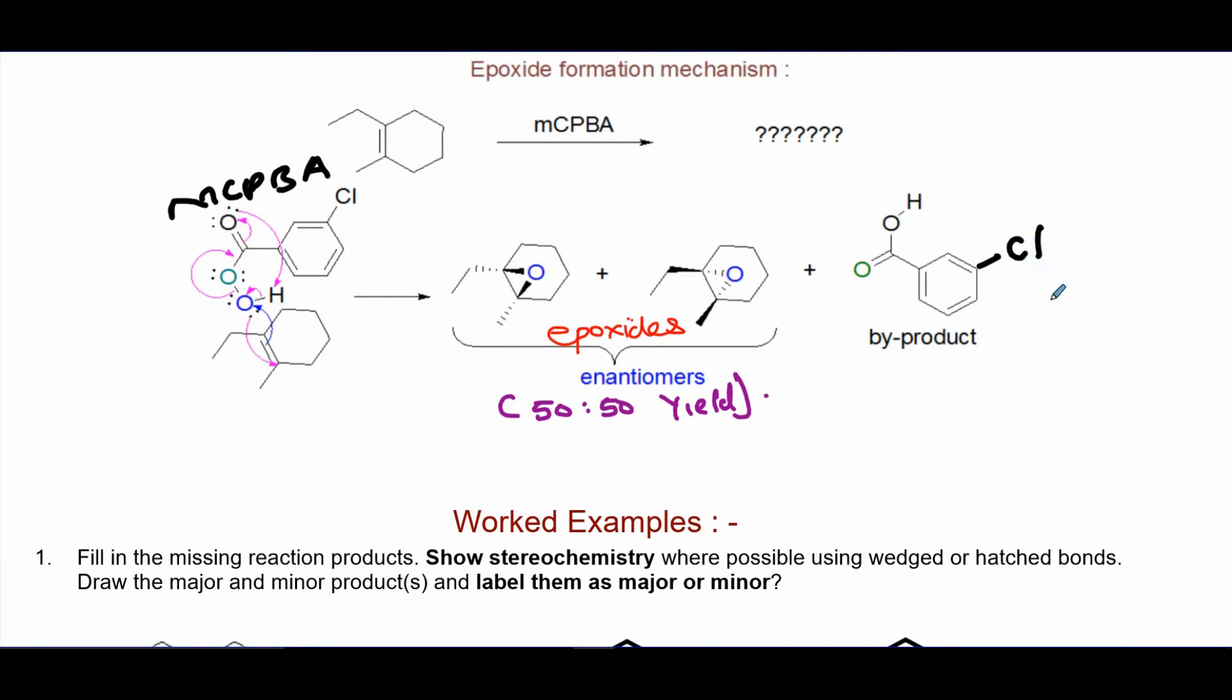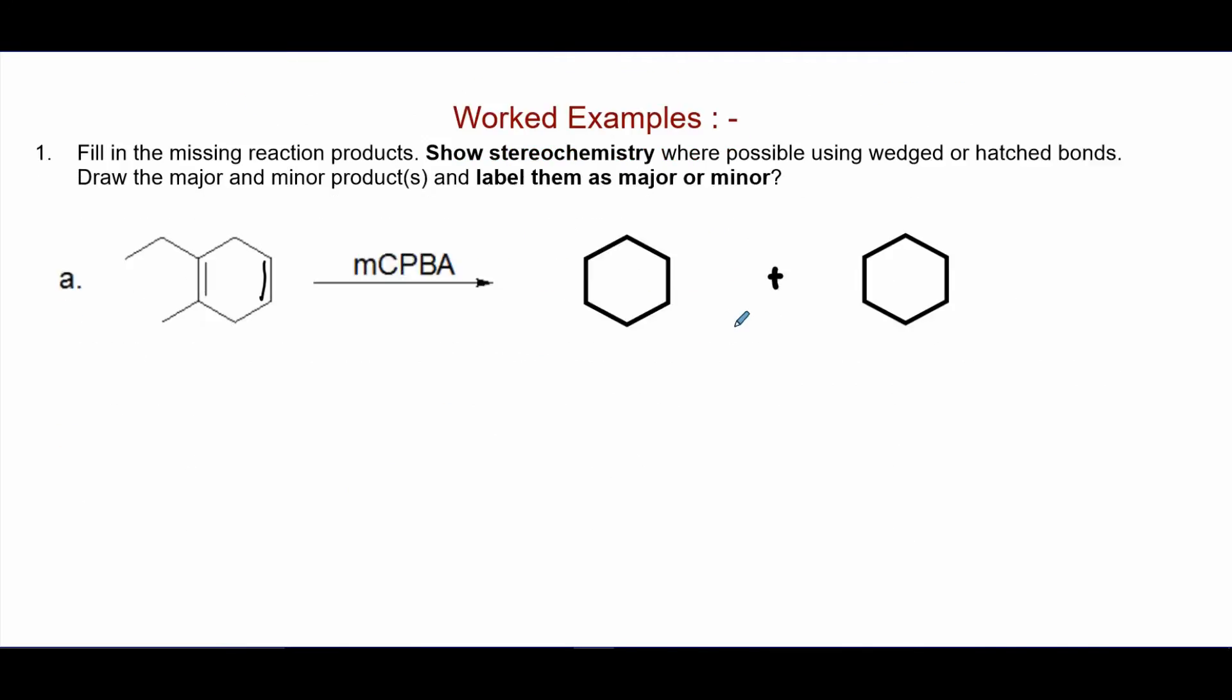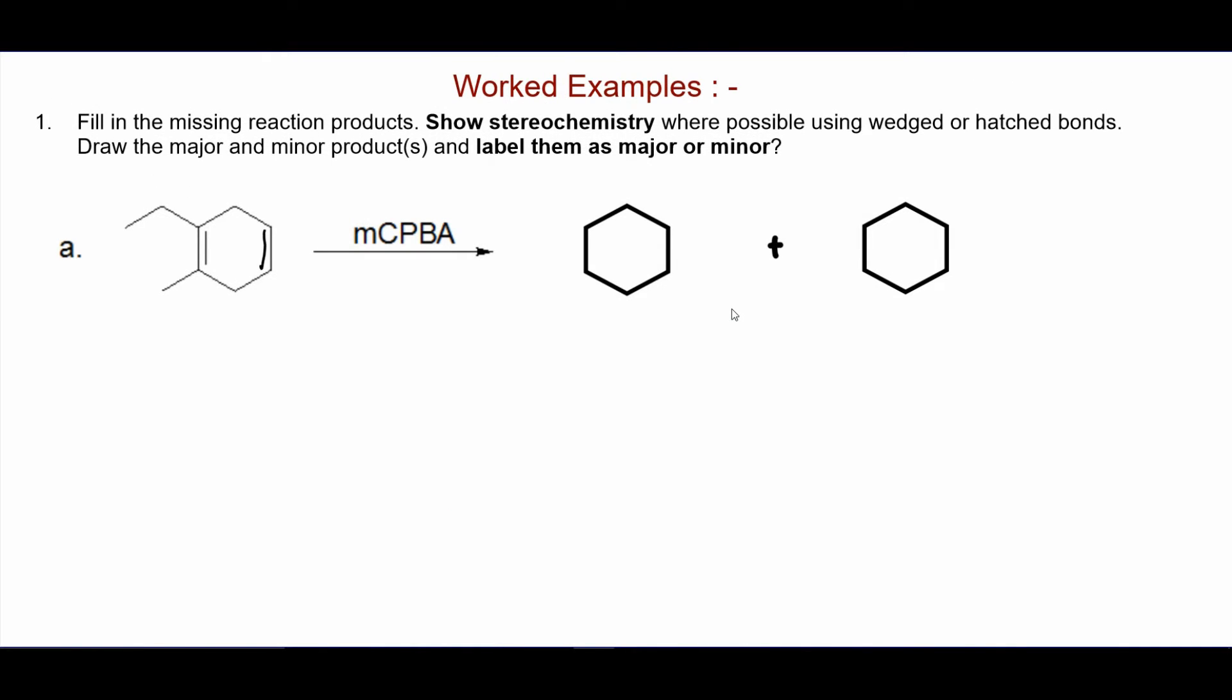Let's look at examples. Worked examples: Fill in the missing reaction products, show stereochemistry where possible using wedged or hatched bonds. Draw the major and minor products, and I would also say if it's racemic mixture or enantiomers in diastereomers formed.